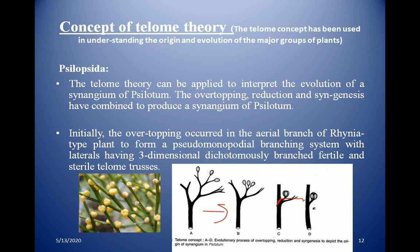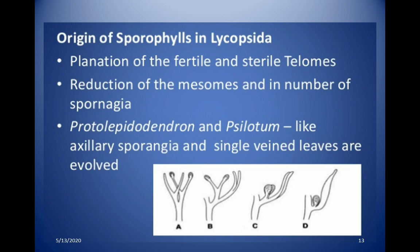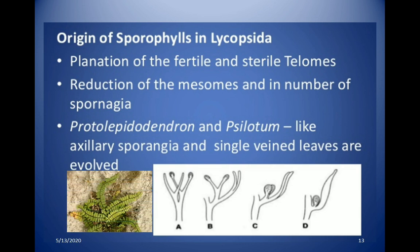In Lycopsida, planation of the fertile and sterile telomes occurs first, followed by reduction of the mesomes and the number of sporangia. Reduction also causes the lateral branches to become shortened due to the reduced activity of meristematic cells. The picture shows how Protolepidodendron developed from a rhynia-type plant because of planation and reduction.